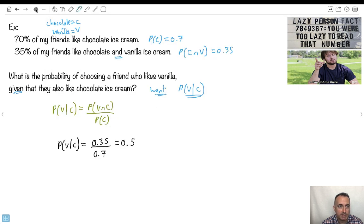So there we go. It's 50% likely. So what that tells you is if you're told that someone already likes chocolate, the probability of them liking vanilla is actually 50%. There you go. So that's how we can do these.